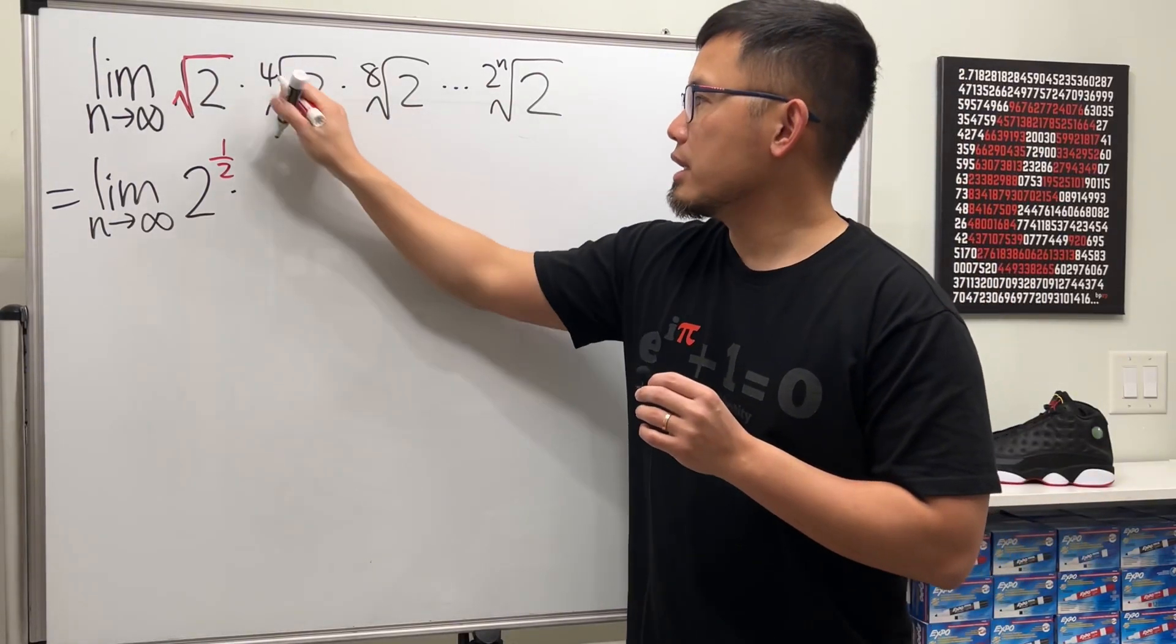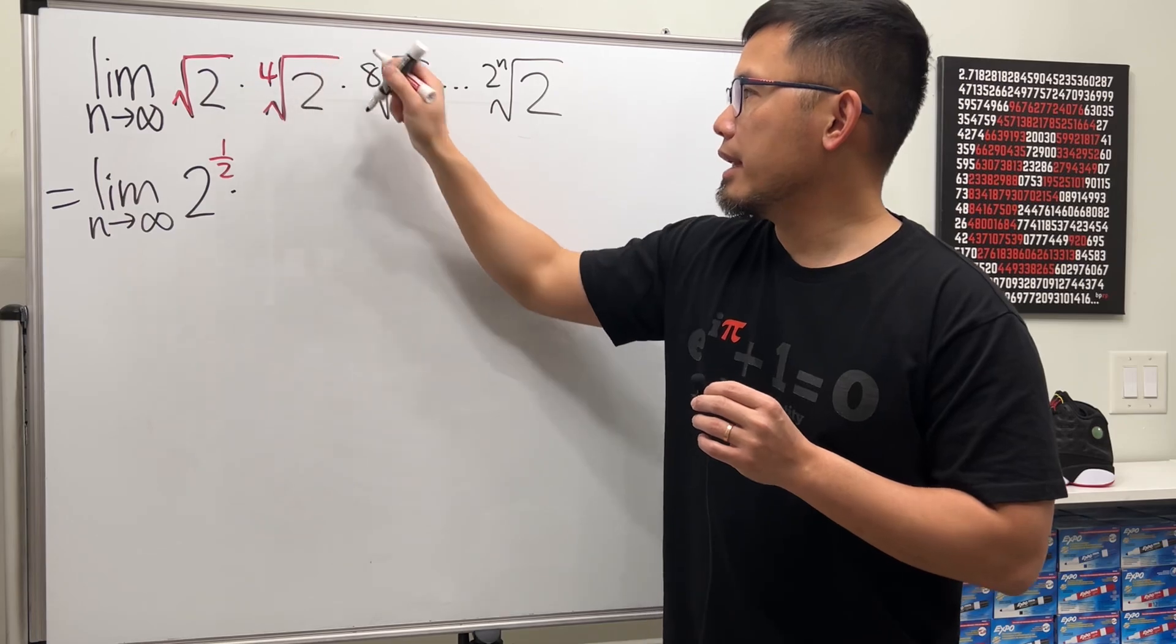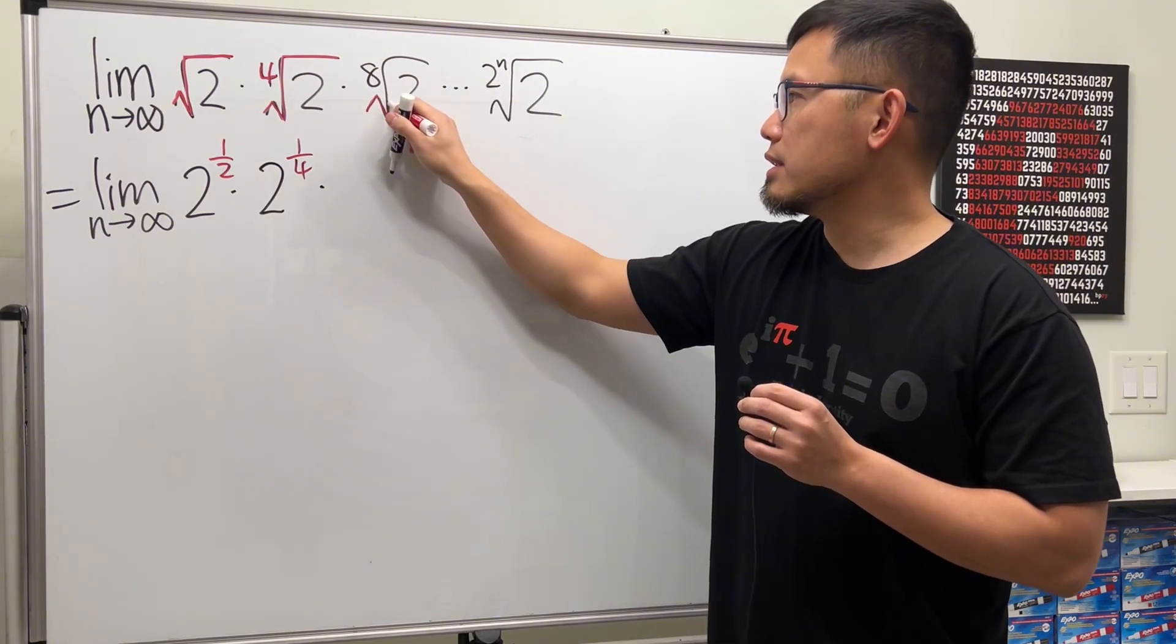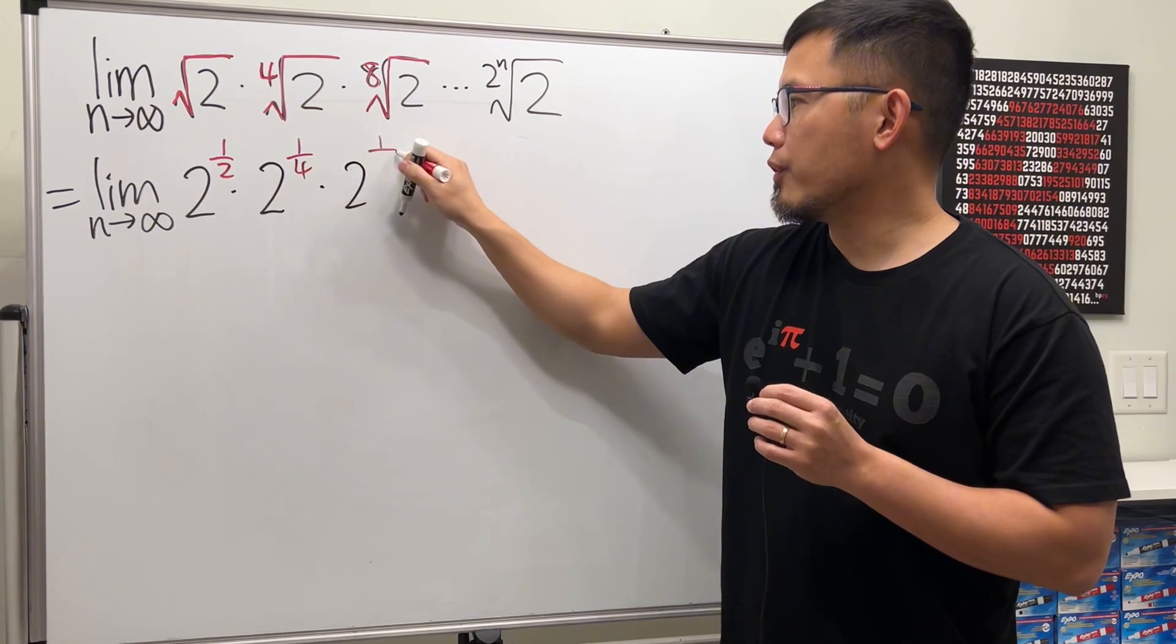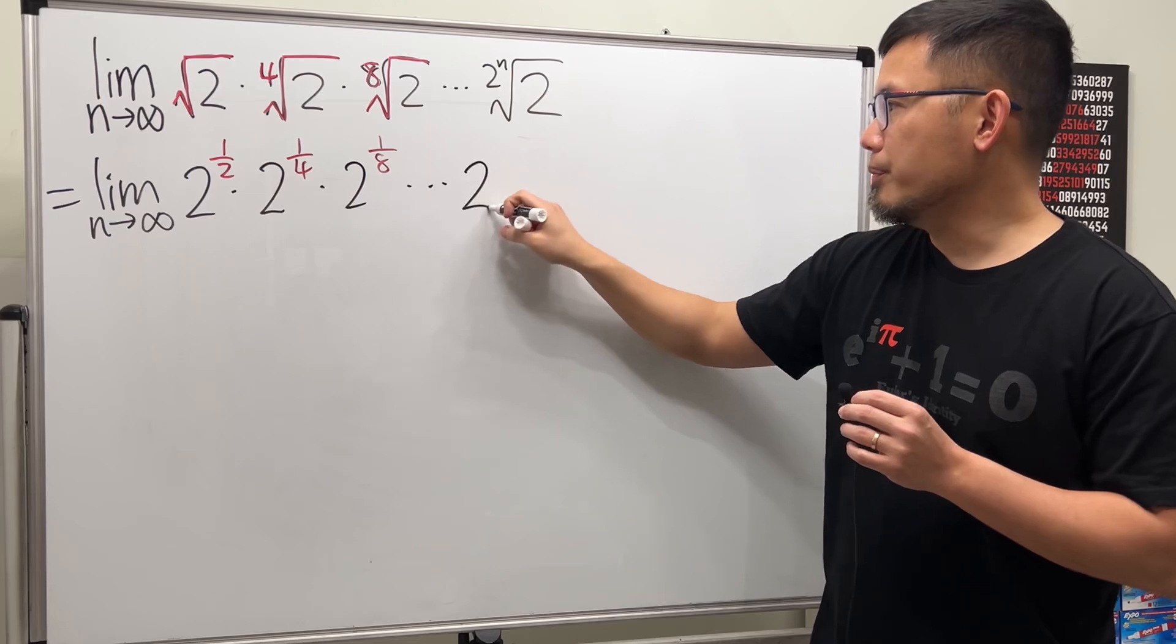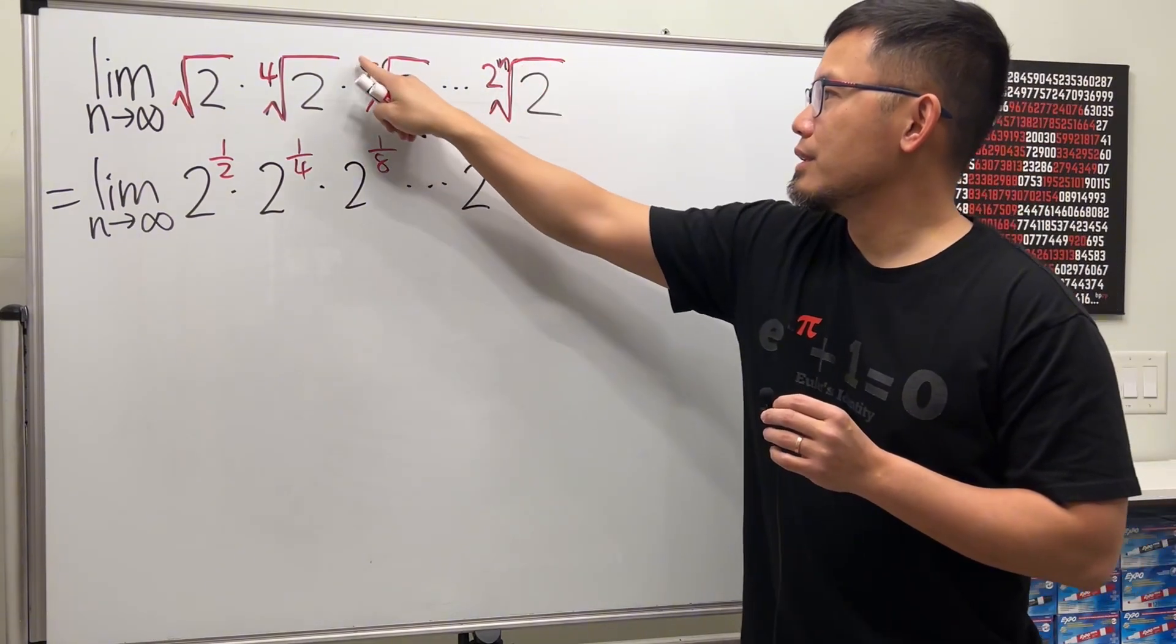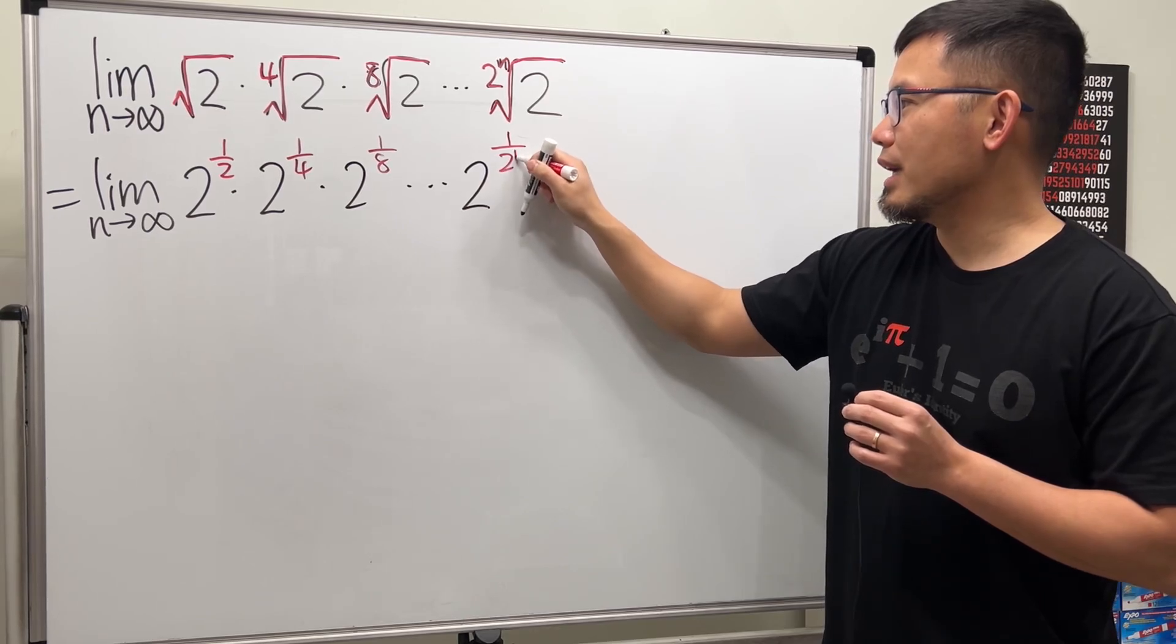And then for the next one, here we have the fourth root of 2, and this is the same as 2 raised to the 1 over 4 power. And then so on. The next one is the eighth root of 2, so this is 2 to the 1 over 8. And then dot dot dot, multiplying. And the last one, we have 2, and this is the 2 to the nth power root, so this becomes 1 over 2 to the nth power.